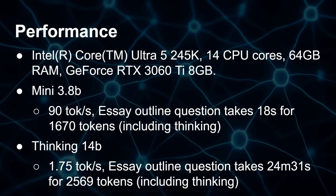On a machine with an RTX 3060 Ti and 8 gigabytes of VRAM, the mini model runs at 90 tokens per second, so the Battle of the Bulge essay comes out in just 18 seconds. However, the 14 billion parameter model on that same 8 gigabyte GPU drops to 1.75 tokens per second, making the essay take 25 minutes — because it's an 11 gigabyte model and 3 gigabytes still run from main memory, creating a bottleneck.